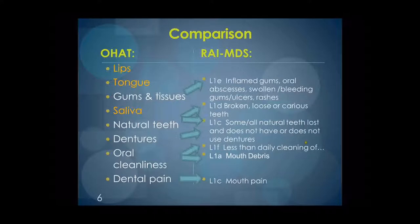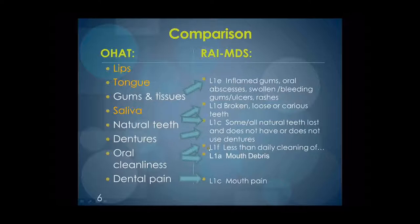The Resident Assessment Instrument, or RAI Minimum Data Set, is the one normally used in long-term care. In comparing the OHAT to the RAI MDS, we suggest that you do the OHAT and then add the outcome information into the RAI MDS. Specifically, in the OHAT tool, lip, tongue, and saliva are covered. Gums and tissues, natural teeth, dentures, oral cleanliness, and to some extent dental pain, mouth pain, and mouth debris are also covered. So the information contained in the OHAT could be merged and put into the RAI MDS.